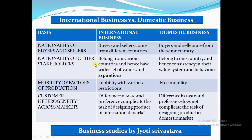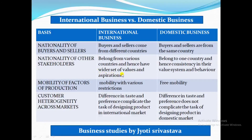The second difference is the nationality of other stakeholders. Stakeholders include suppliers, employees, middlemen, and shareholders. In international business, these stakeholders belong to various countries and have a wider set of values and aspirations compared to domestic business, where all stakeholders are typically from the same country.